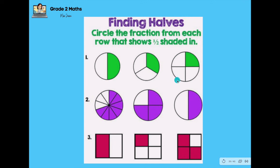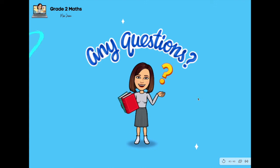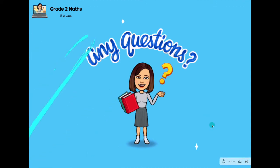Pause the video and circle the fraction from each row that shows one half — you can do this on your notebook. For number one, which one shows one half? Draw that in your notebook. Number two, which shows one half? Draw it. Number three, which shows one half? Draw that. I hope you learned something today about unit fractions. If you have a question, feel free to ask Teacher Jessa. That's all for today — have a good day, bye bye everyone! Air hugs and kisses, love you!